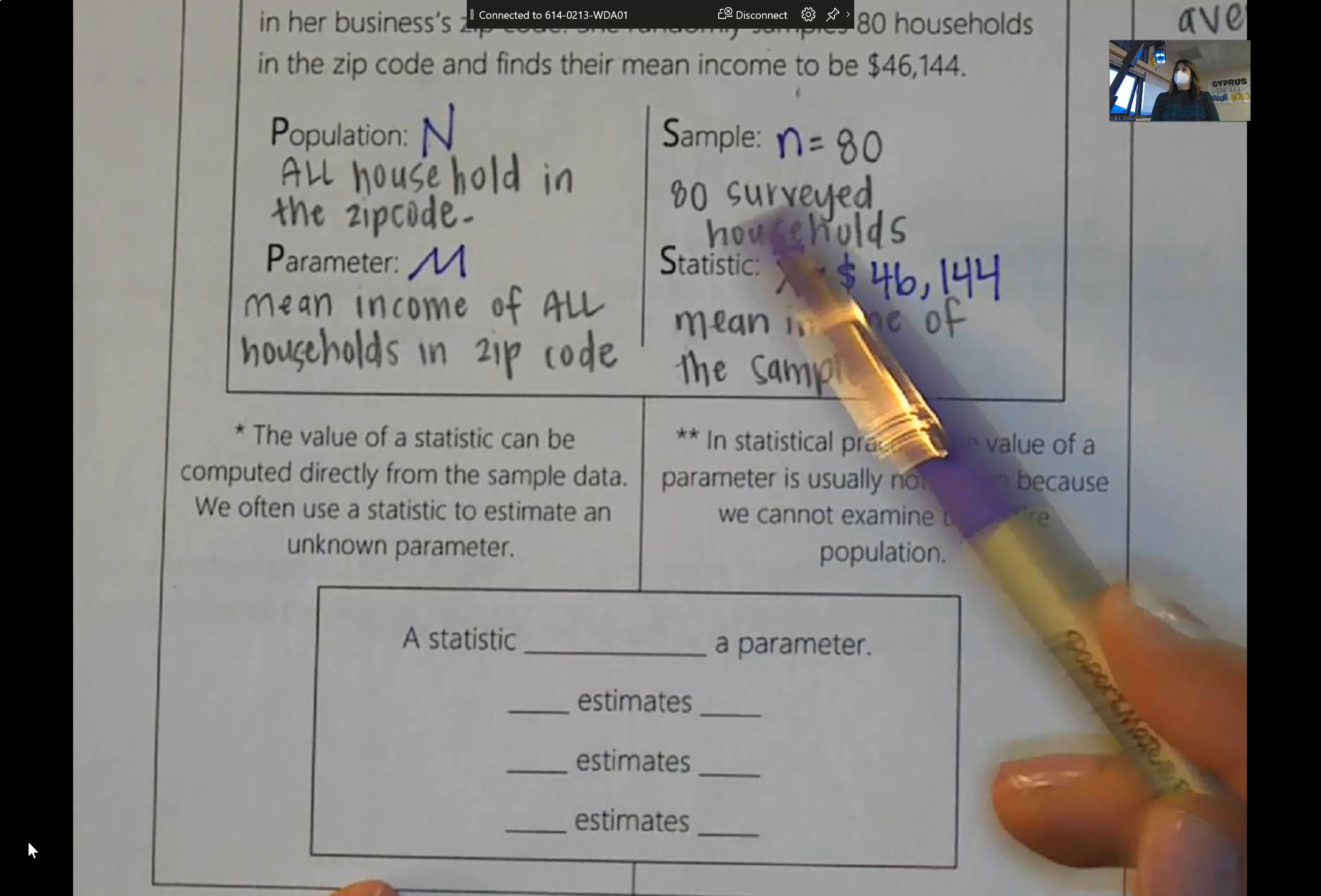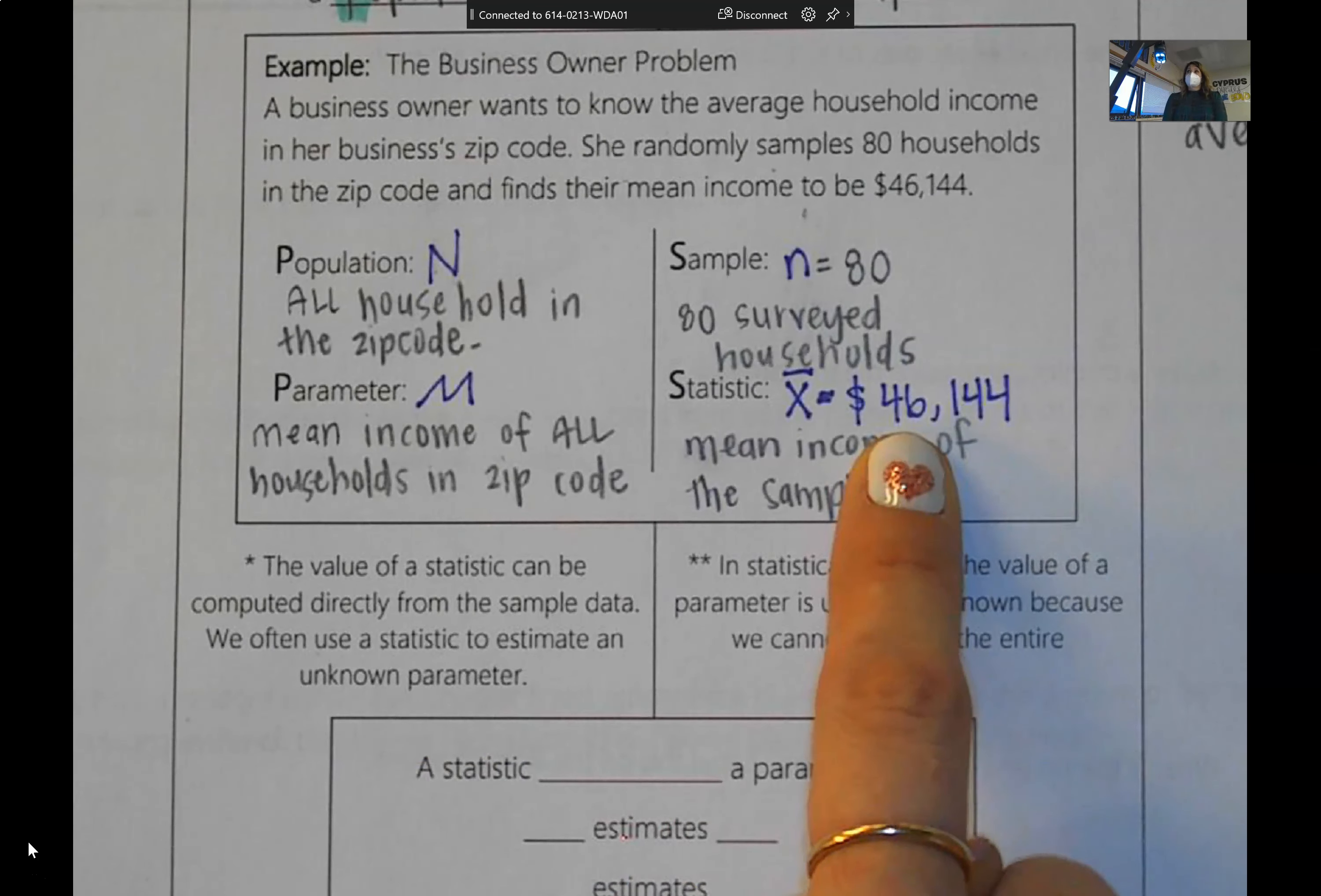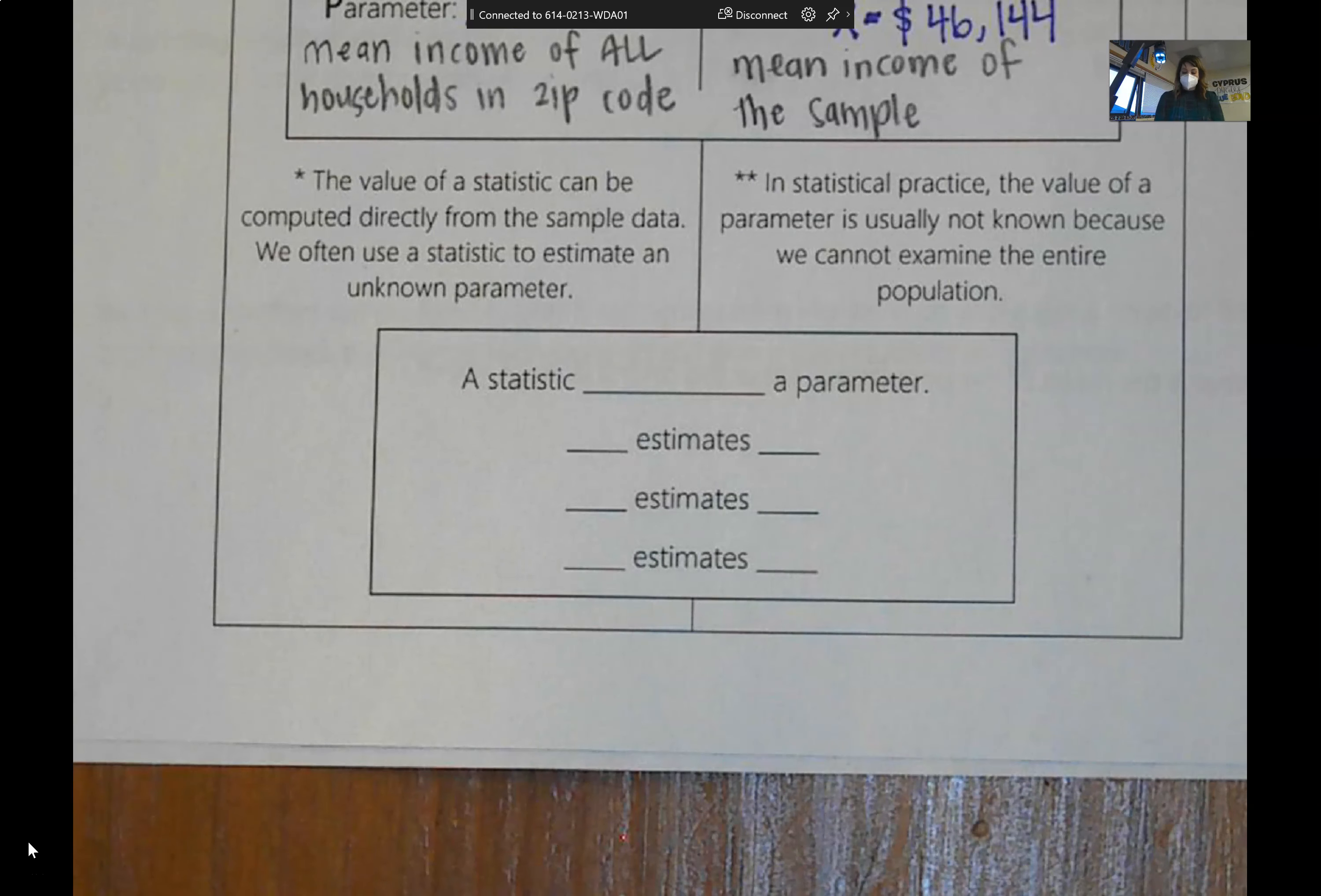Down here, this asterisk goes with the sample. So the value of a statistic can be computed directly from the sample. And then we use that statistic to estimate for the population. So population, we typically don't know. And it's usually too much work to actually get that info. So instead, we take a sample, we actually calculate the average or the proportion or the range. And then we use that as our estimate for the population. So this business owner is going to conclude that the average income of the households around her business is about $46,000. You're hanging in there? Yes. Okay. So this is a summary of this page. A statistic estimates a parameter.